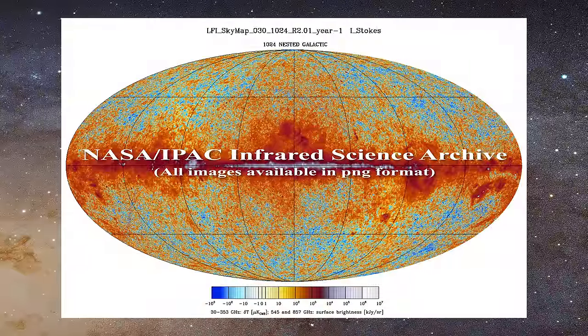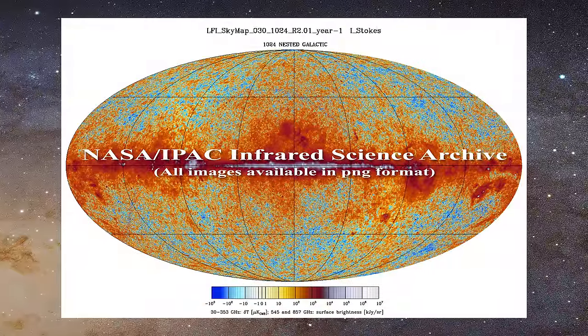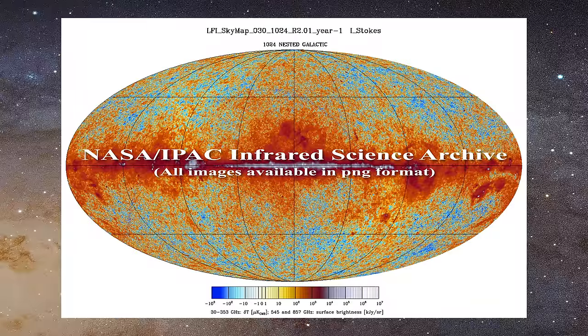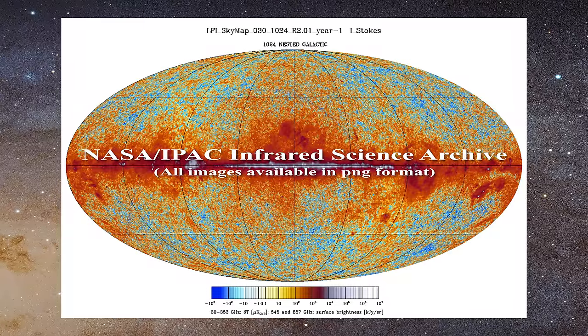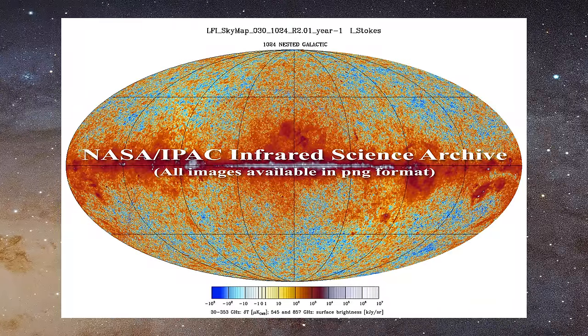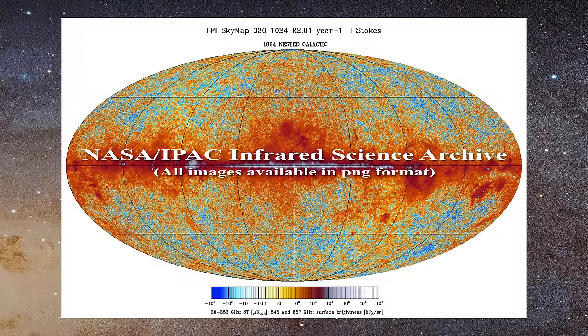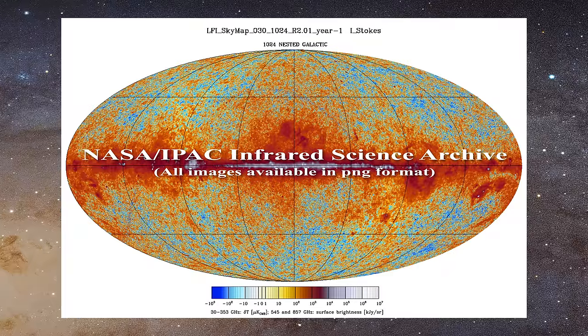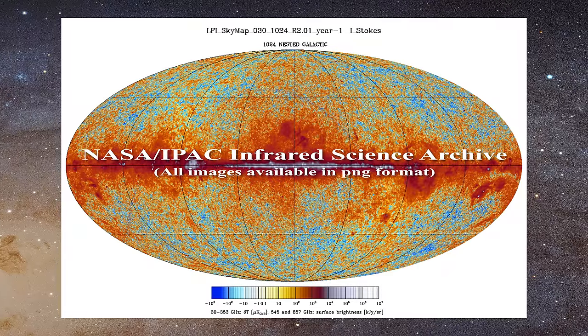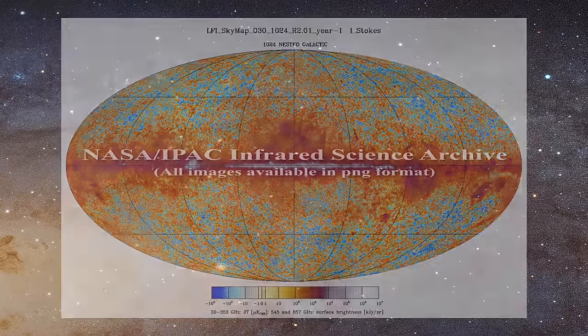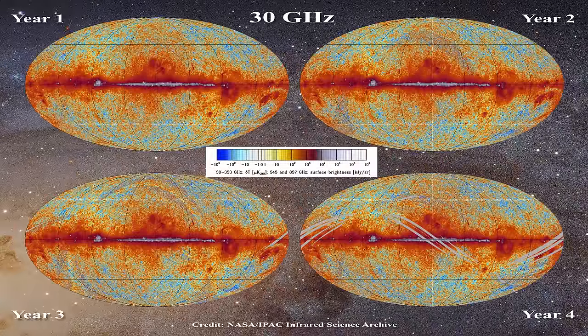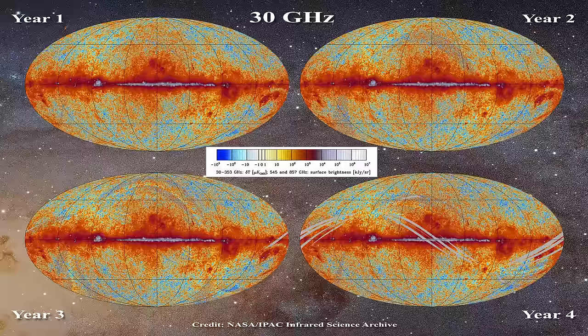Fortunately, the Planck mission was a joint project between the ESA and NASA. As a consequence, there has been a public data release, and all Planck images can be obtained in high resolution from the NASA IPAC Infrared Science Archive at Caltech, which is linked below. So let us begin with LFI data, examining the 30 GHz result in year 1 through year 4, as shown here.